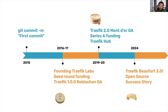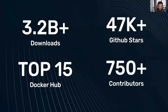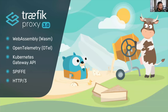Today in 2024 we finally release Traefik 3.0, the third major version. I also want to highlight the crazy traction numbers — more than 3 billion downloads, 47,000 stars on GitHub, it's in the top 15 most downloaded projects on Docker Hub. Most importantly, more than 700 contributors on the project so far. It's clearly a community project where anybody can have an impact.